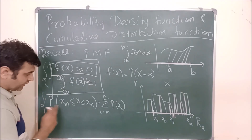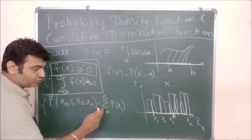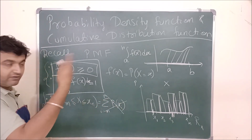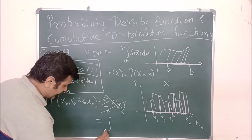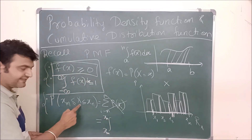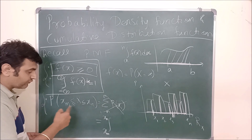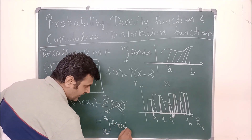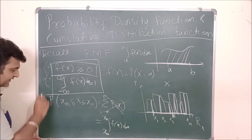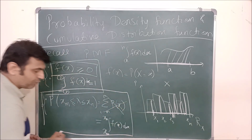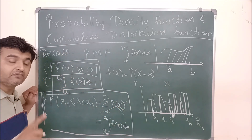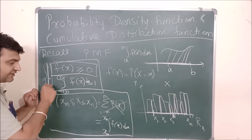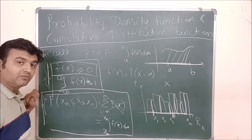And this is how you find probability: in the discrete case you summed up because you had discretization, but now you have continuation. So it is the integral from xₘ to xₙ of F(x) dx, since X takes all real values from xₘ to xₙ. Using this formula, one finds the probability distribution for a continuous random variable.